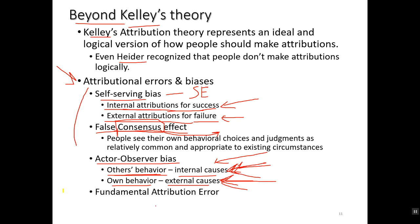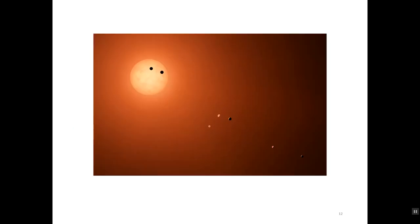Finally, there is the fundamental attribution error — that is so important it's covered in Part 3. I want to point out here that the fundamental attribution error is essentially just the 'others' behavior' part of the actor-observer bias. I'll see you in Part 3.